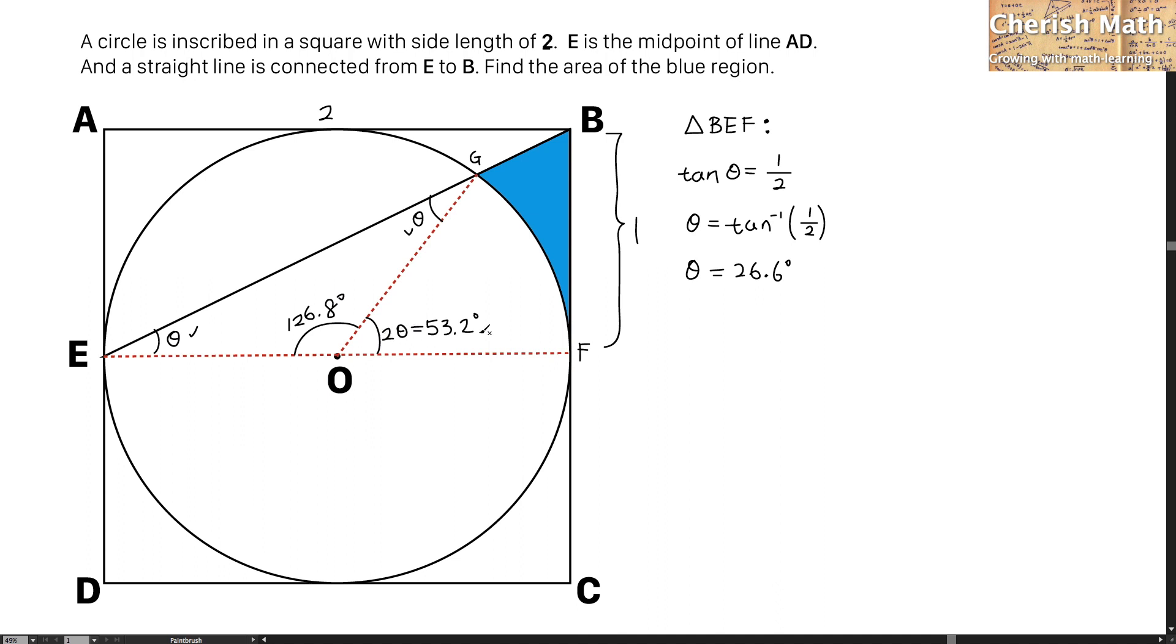To find the area of the blue region, that is by using the entire area of the rectangle ABFE minus the area of triangle ABE minus area of triangle EOG, and finally minus the area of sector FOG.